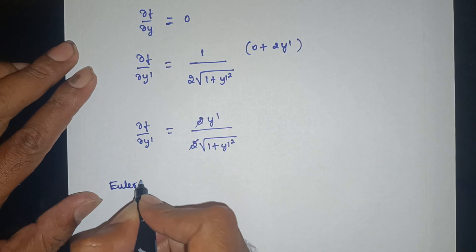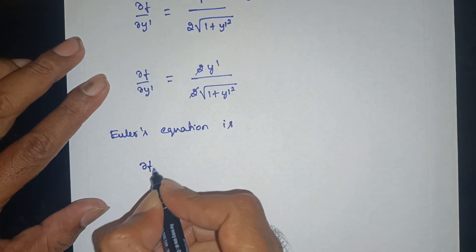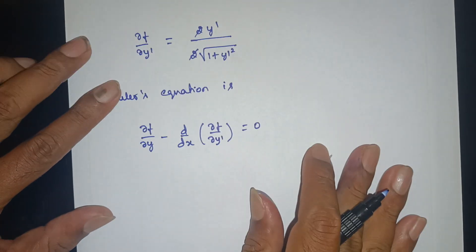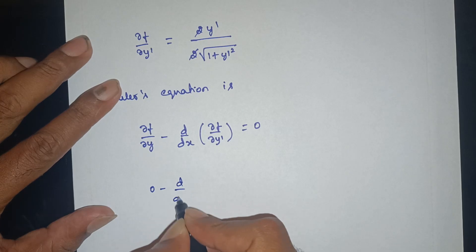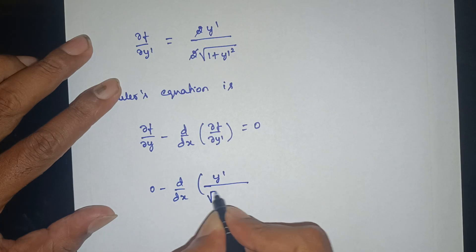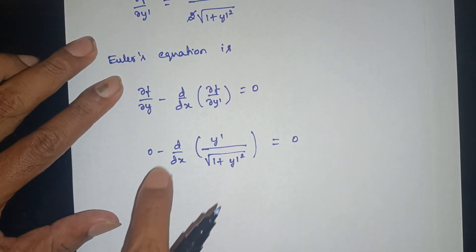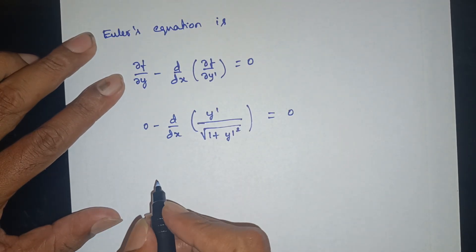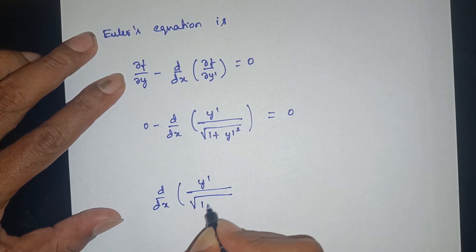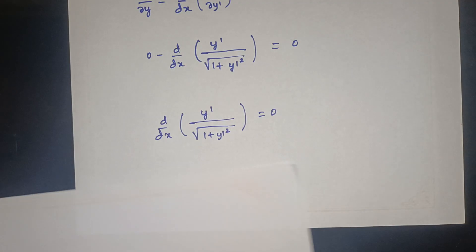Now apply Euler's equation: ∂f/∂y − d/dx(∂f/∂y') = 0. Substituting, we get 0 − d/dx(y' / sqrt(1 + y'²)) = 0. So d/dx(y' / sqrt(1 + y'²)) = 0. Integrating both sides: